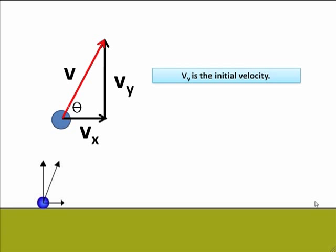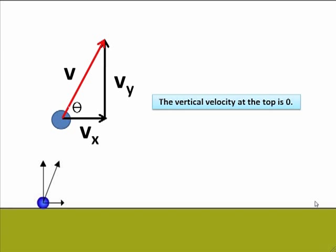And Vy is the initial velocity in the upward direction that we will use in the kinematics equations. And the vertical velocity at the very top of that motion is zero. It still has a sideways horizontal velocity, but in the vertical direction it passes through point zero.